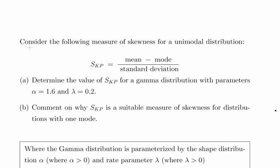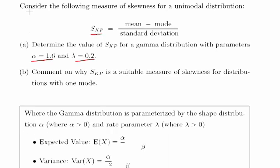In this presentation we're going to look at the skewness measure for the gamma distribution. Consider the following measure of skewness — this is the Pearson skewness coefficient. For a unimodal distribution, SKP is the mean minus the mode over the standard deviation. Determine the value of the skewness coefficient SKP for a gamma distribution with parameters alpha equals 1.6 and lambda equals 0.2, the shape and rate parameters respectively. Comment on why SKP is a suitable measure of skewness for a distribution with one mode.